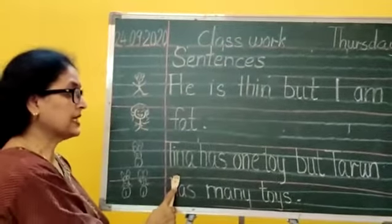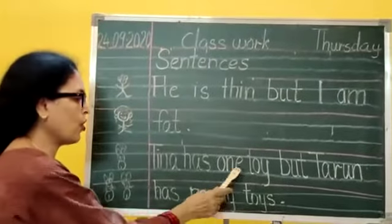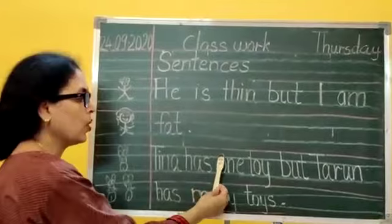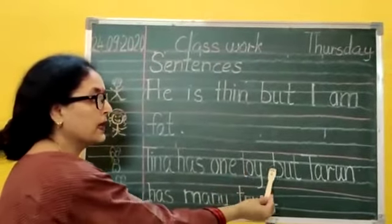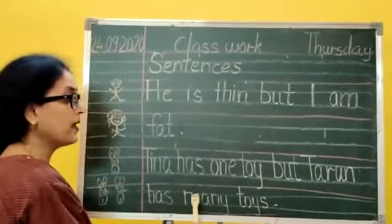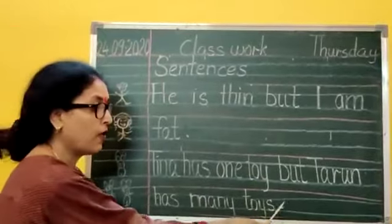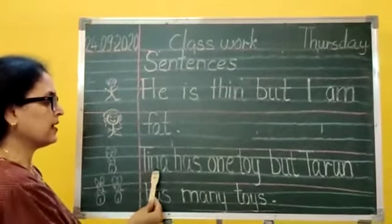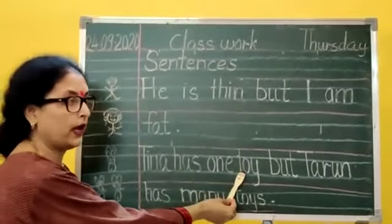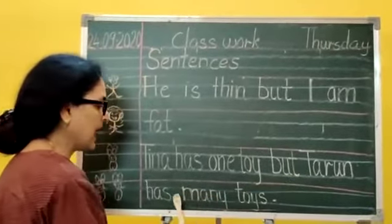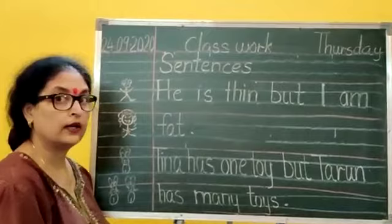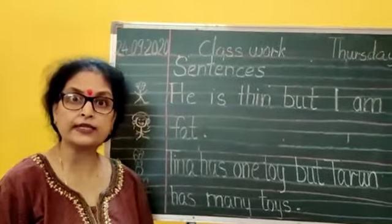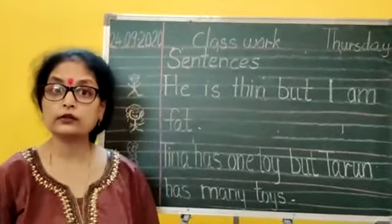Now the second sentence: Tina has one toy but Tarun has many toys. Full stop. See the full stop. Again let's read: Tina has one toy but Tarun has many toys. This way we will all re-read the sentence and correct ourselves.